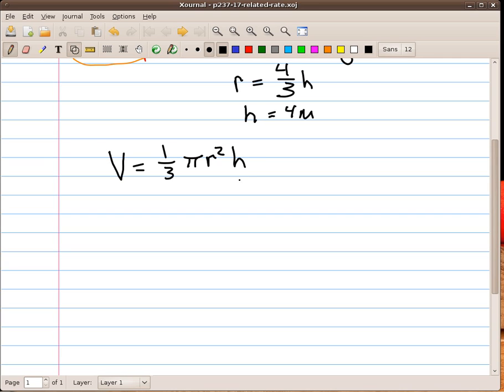Since I know that r is 4 thirds of h, I'm going to substitute that in right now. I can get rid of a variable. So I've substituted in 4 thirds h where the r was. And after a little simplification, I think you'll agree that this works out to be 16 over 27 pi h cubed.